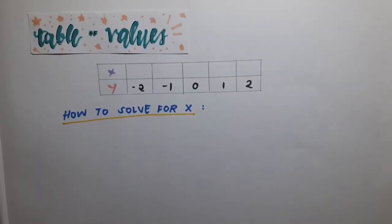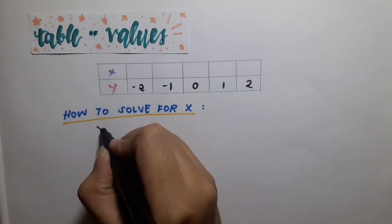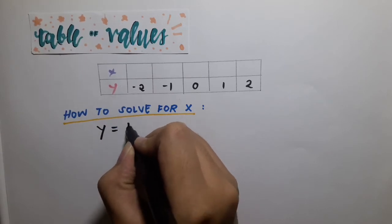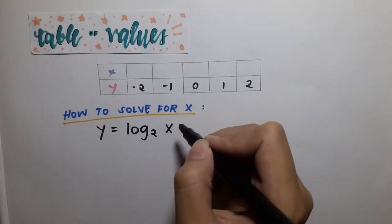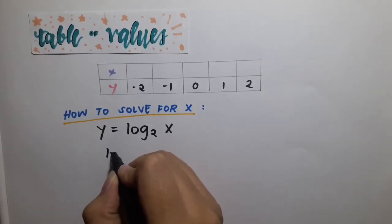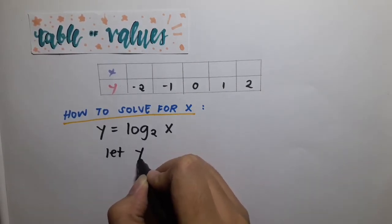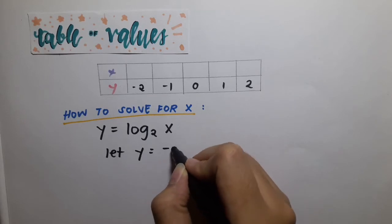Let's proceed in finding the table of values for the equation logarithm of x to the base of 2. So we have the values of negative 2, negative 1, 0, 1, and 2. So here's our equation, and let's try to substitute the values of y to get the values of the x.